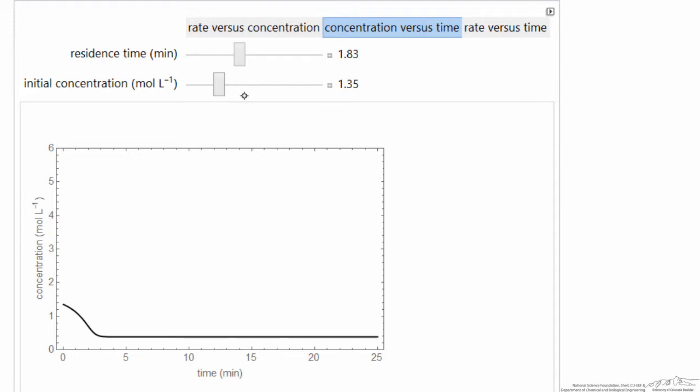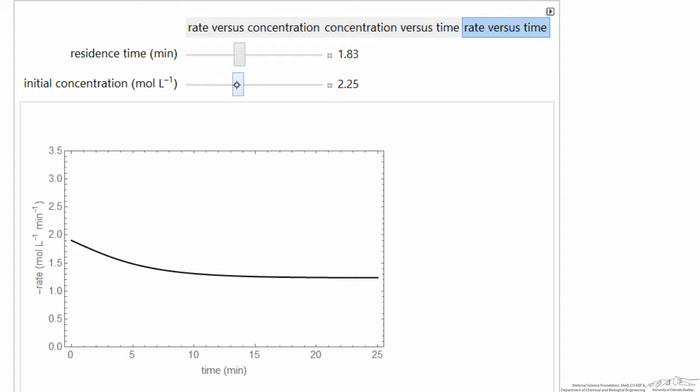So which steady state we end up at is a function of what our feed concentration is. And we can also look at how the rate changes with time. As we change initial concentration in the reactor, we can see how the rate changes with time, and we go to a high rate in this case, and here we have a much lower rate. You can look at this simulation to give you a better understanding of behavior, and particularly of a non-steady state CSTR.